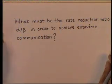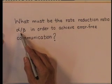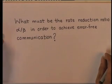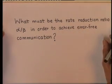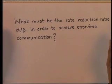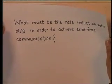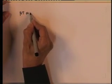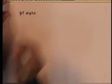One important question however remains unanswered. The question is: what must be the rate reduction ratio, that is alpha by beta, in order to achieve error free communication? To answer this question, we observe that increasing t increases the length of the transmitted sequence, which is given by beta times capital T digits.